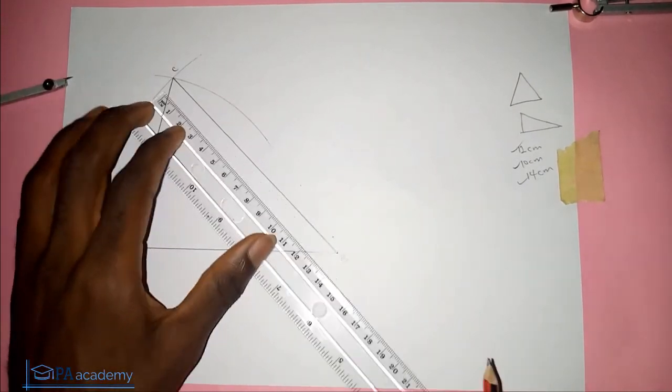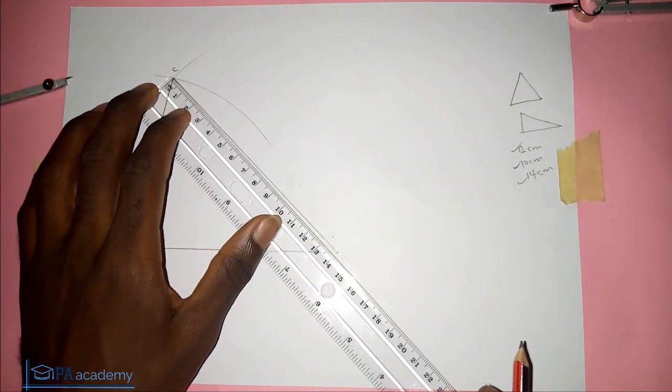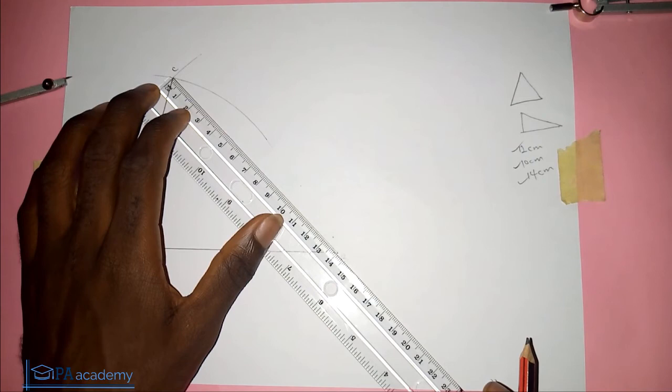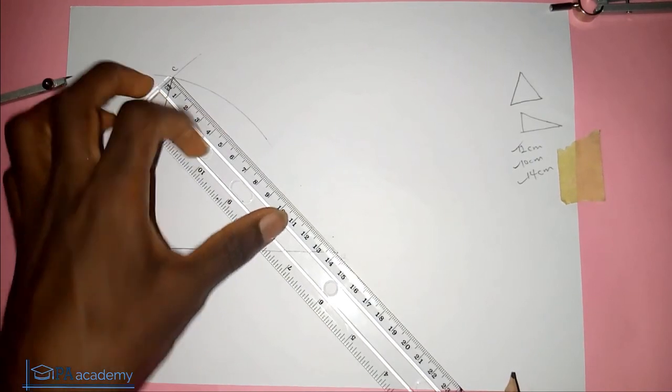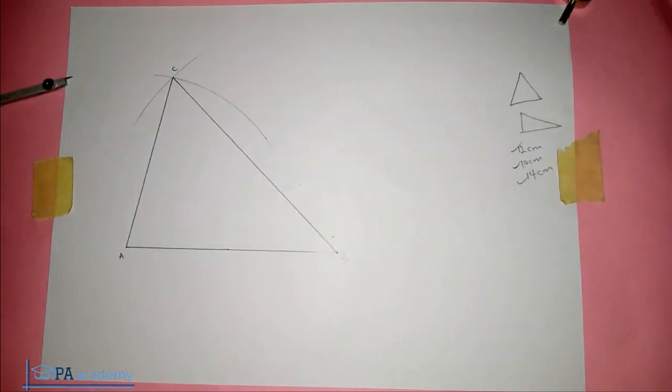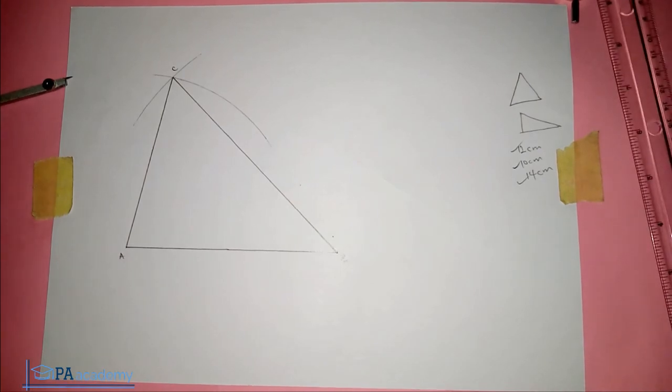So let's measure the third side, which is 14, and see if it is 14 also. So you can see that it's 14. So this is how you construct a triangle when you are given just the three sides of the triangle.